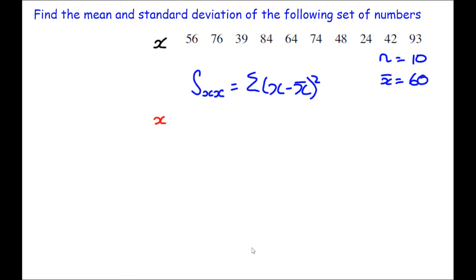So S_xx equals the sum of the differences between each of these values and x̄ all squared. I'm going to go ahead and see what do I get for x minus x̄. Each of my data points with the mean, the value 60 subtracted.